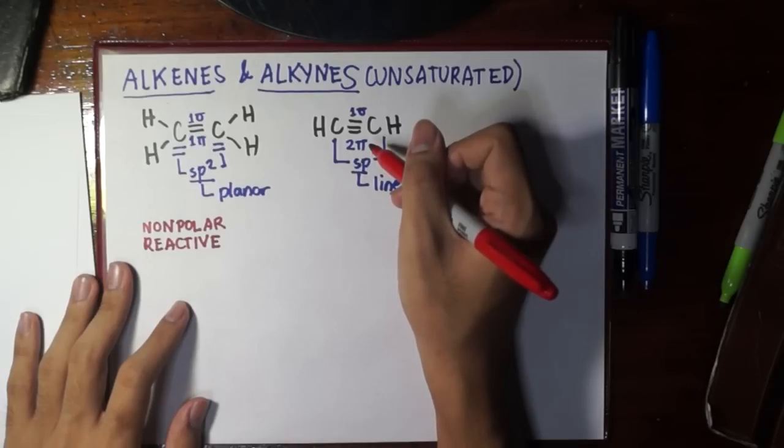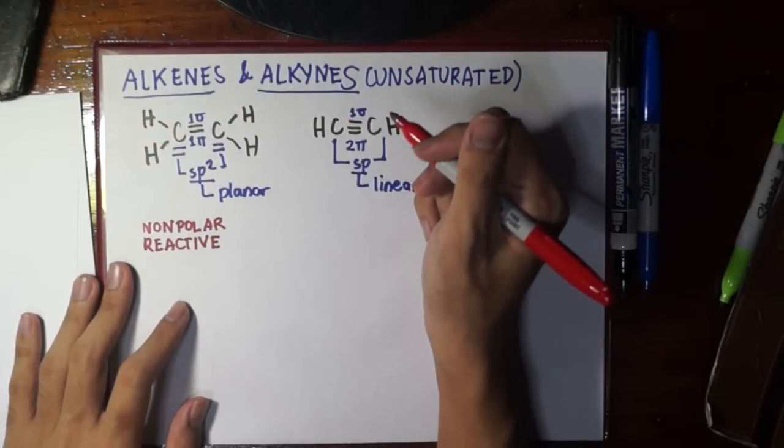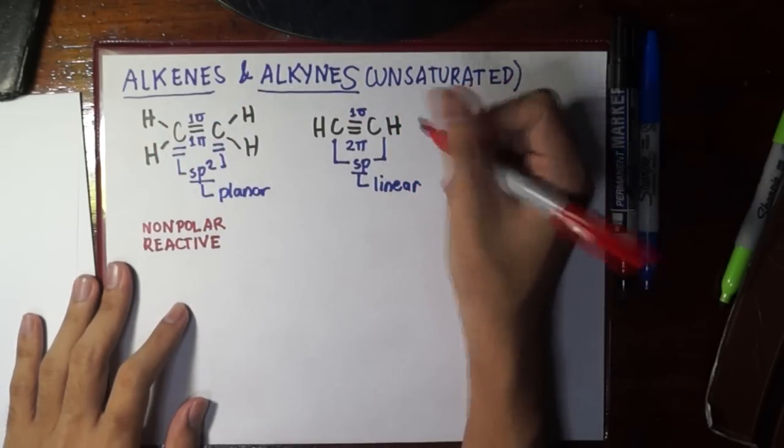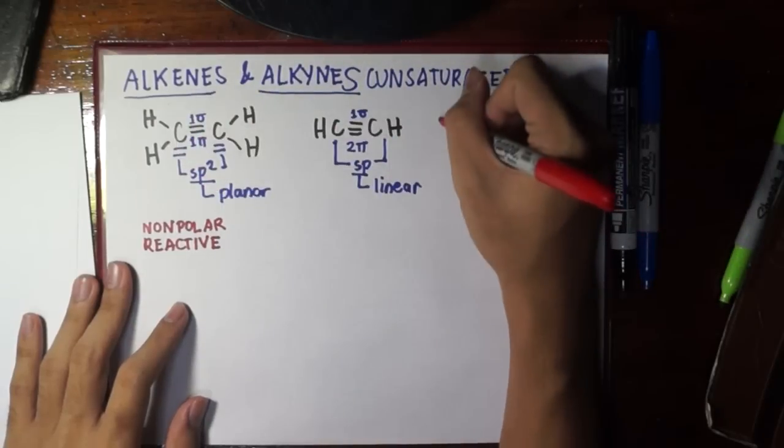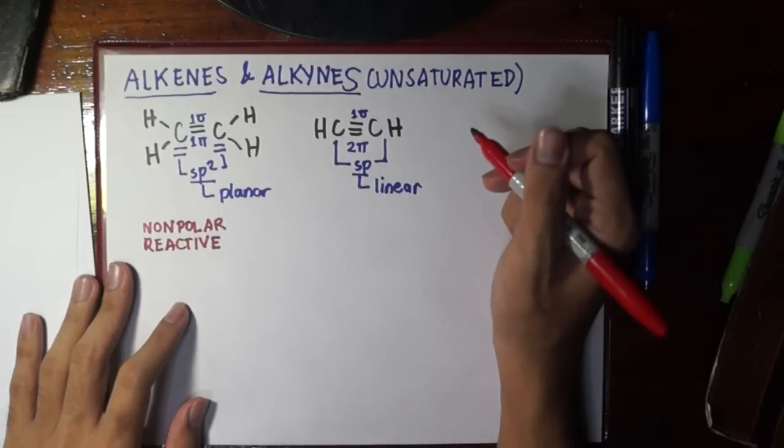These pi bonds are responsible for giving reactivity because pi bonds are weaker and easier to break. If an electrophile attacks them, it would be easy because all the electrophile has to do is break the pi bond.